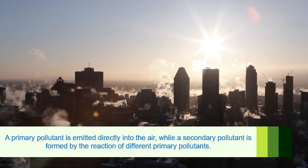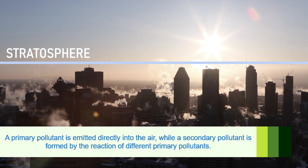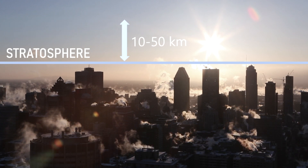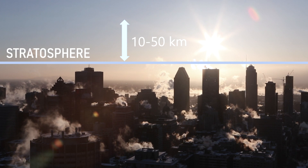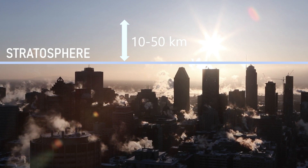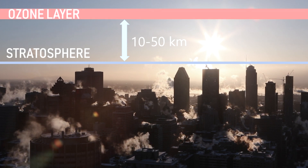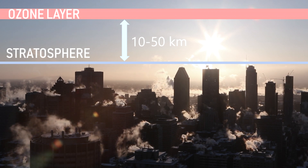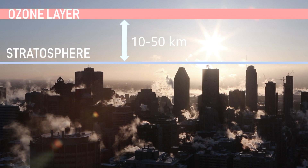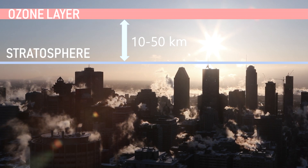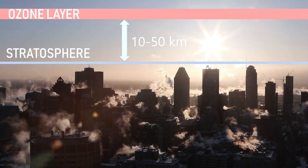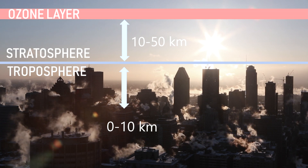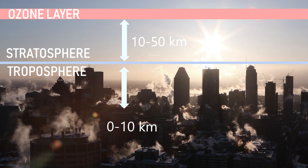However, the ozone found in the stratosphere, which is the layer found approximately between 10 to 50 km in altitude, is beneficial for all living organisms, as it forms the well-known ozone layer. This layer acts as a filter, protecting us from ultraviolet radiation from the sun. In contrast, the ozone found in the troposphere, which is the layer closest to the Earth's surface, is considered a pollutant.